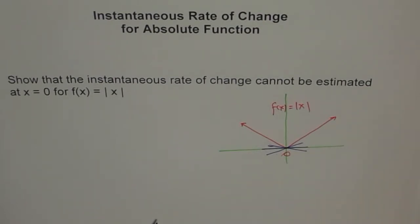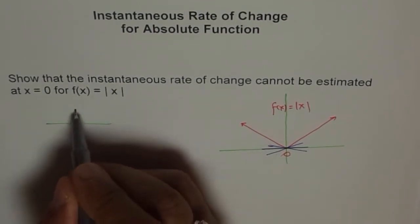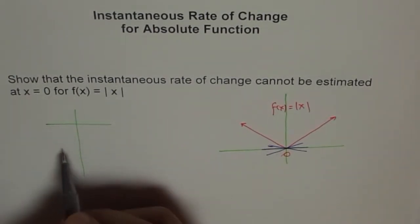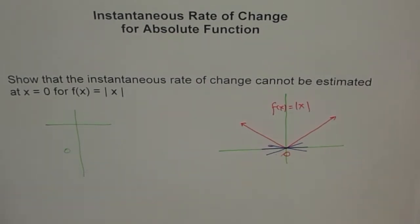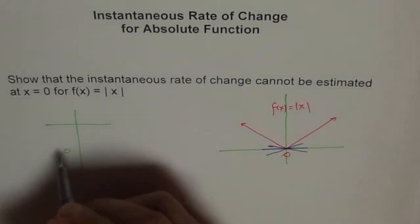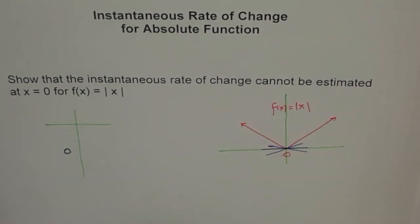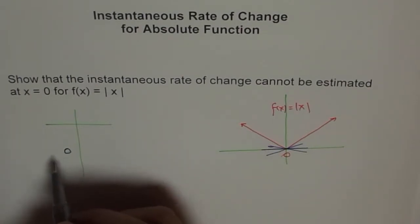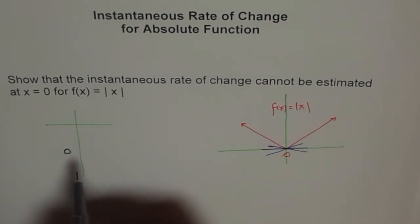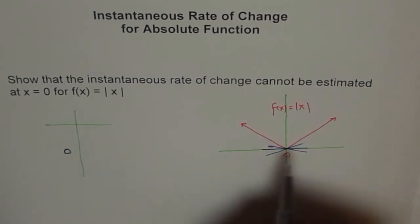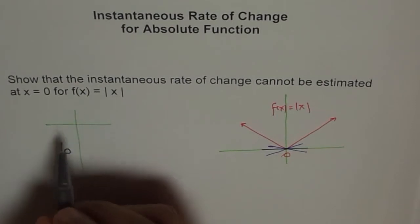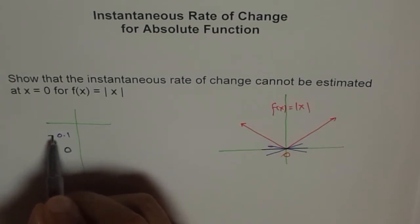The other way of explaining it is that normally how do we find instantaneous rate of change? So, what we do is we just plug in values. We want to find instantaneous rate of change at 0. So, what do we do is we try to find a point very close to 0 and then see what is the rate of change.